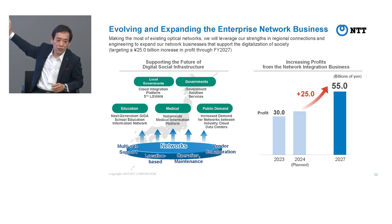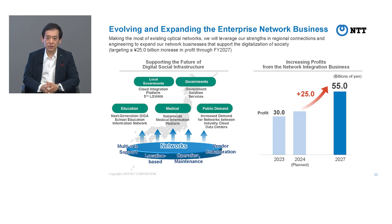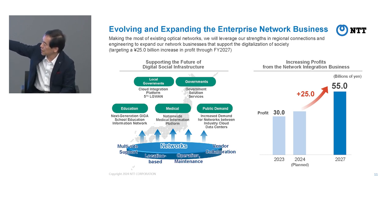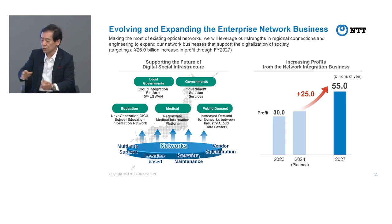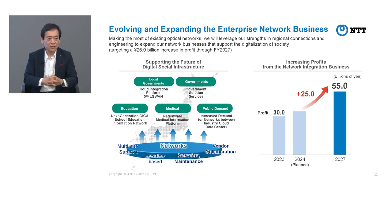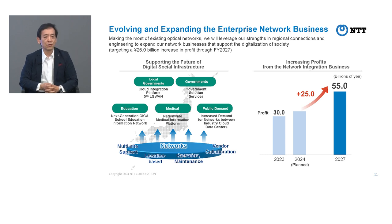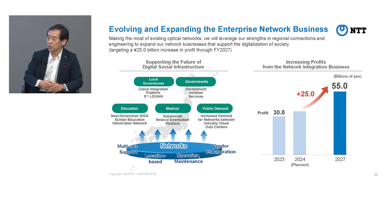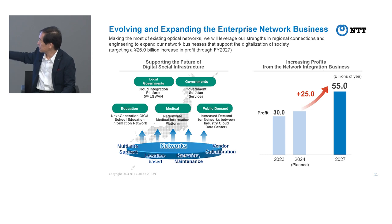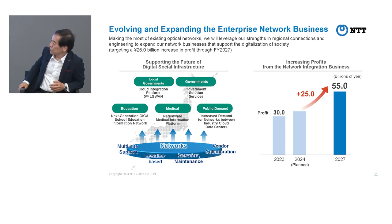In the growth area — the upper right — multiple-site customers are shifting to cloud, connecting with generative AI and AI sites. The major drivers will be local governments, the digital agency, next-generation GIGA schools, the academic network with nationwide junior high and elementary schools connecting, online clinics, and hyperscaler data centers. From Fukuoka, Osaka, Tokyo, and Sapporo all those sites will be connecting. The profit base is about 30 billion yen and we aim to approximately double that by 2027.